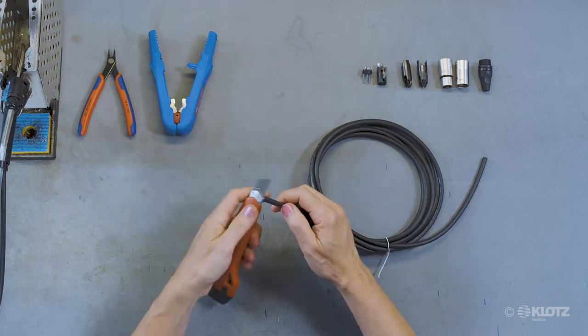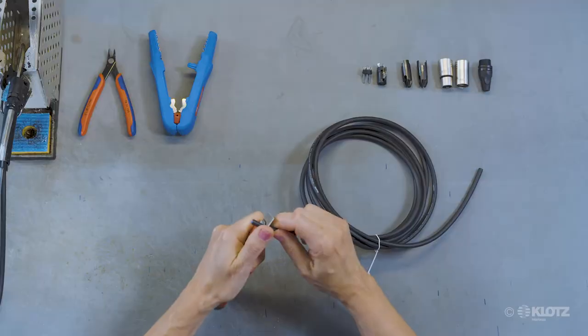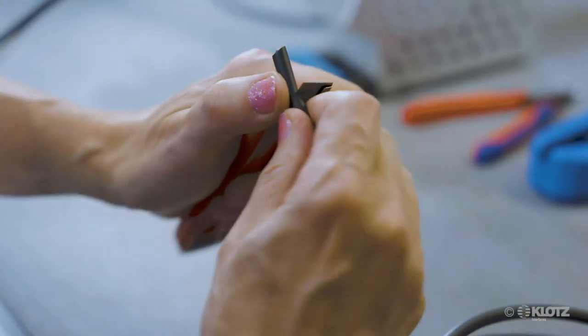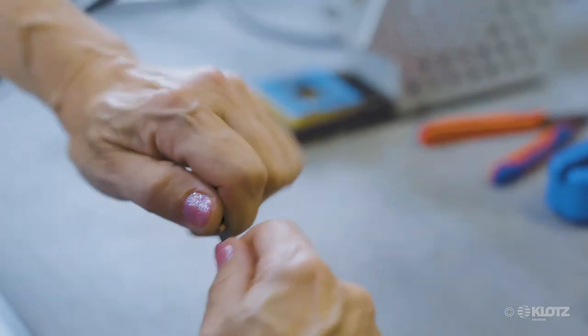Then, please use your utility knife as shown in this video and pre-cut the outer cable jacket about 2 cm behind each cable end and remove the outer PVC cable jacket.